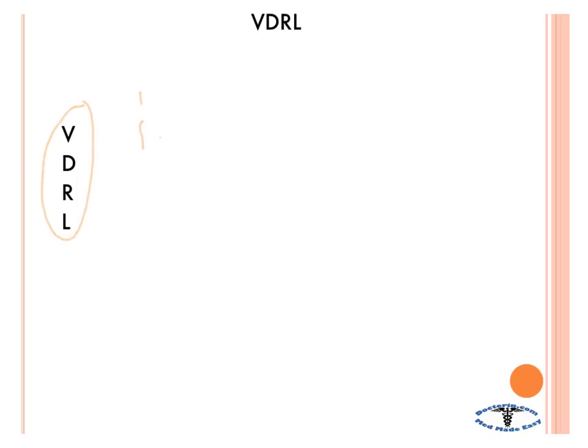The first letter, V, stands for viruses — there are two in particular: mono and hepatitis. Next, D stands for drugs. Drugs in general can also cause a false positive. There are a lot of them, so it's not really important to list them all.